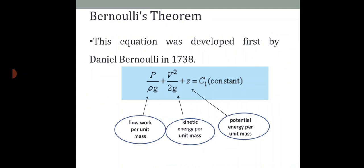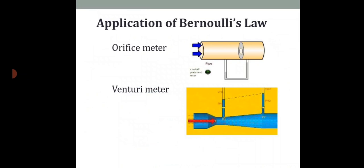The Bernoulli equation is: P/(ρg) + v²/(2g) + z = C₁. The term P/(ρg) represents flow work per unit mass, v²/(2g) represents kinetic energy per unit mass, and z represents potential energy per unit mass, where C is a constant. This theorem is applied in devices such as the orifice meter and venturi meter.